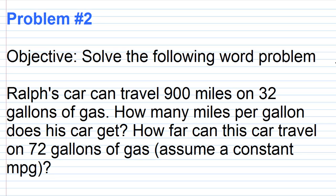Okay, for problem two, the objective is to solve the following word problem. Ralph's car can travel 900 miles on 32 gallons of gas. How many miles per gallon does his car get? How far can this car travel on 72 gallons of gas? Assume a constant miles per gallon.